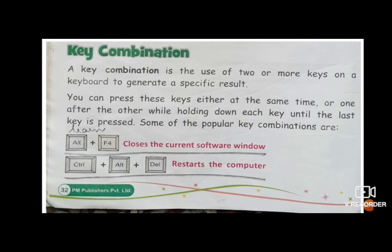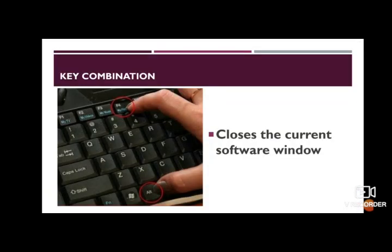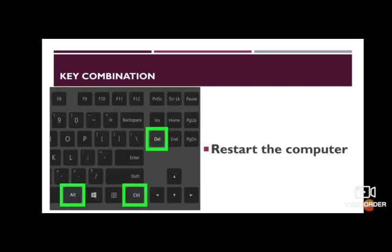There are two examples — learn them, they are very easy. The first example is a combination of two keys: Alt and F4. When you press these two keys together, it closes the current software — whatever software is open, it will close. The second is a combination of three keys: Control, Alt, and Delete. If you press these three keys together, it restarts your computer.